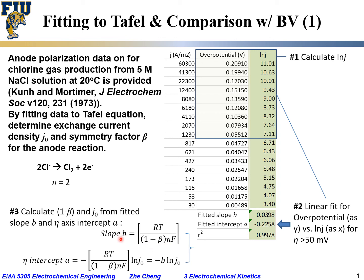And then, with B and the intercept A, we can calculate the exchange current density, which is natural log of j0, natural log for exchange current density, and then calculate the exchange current density.